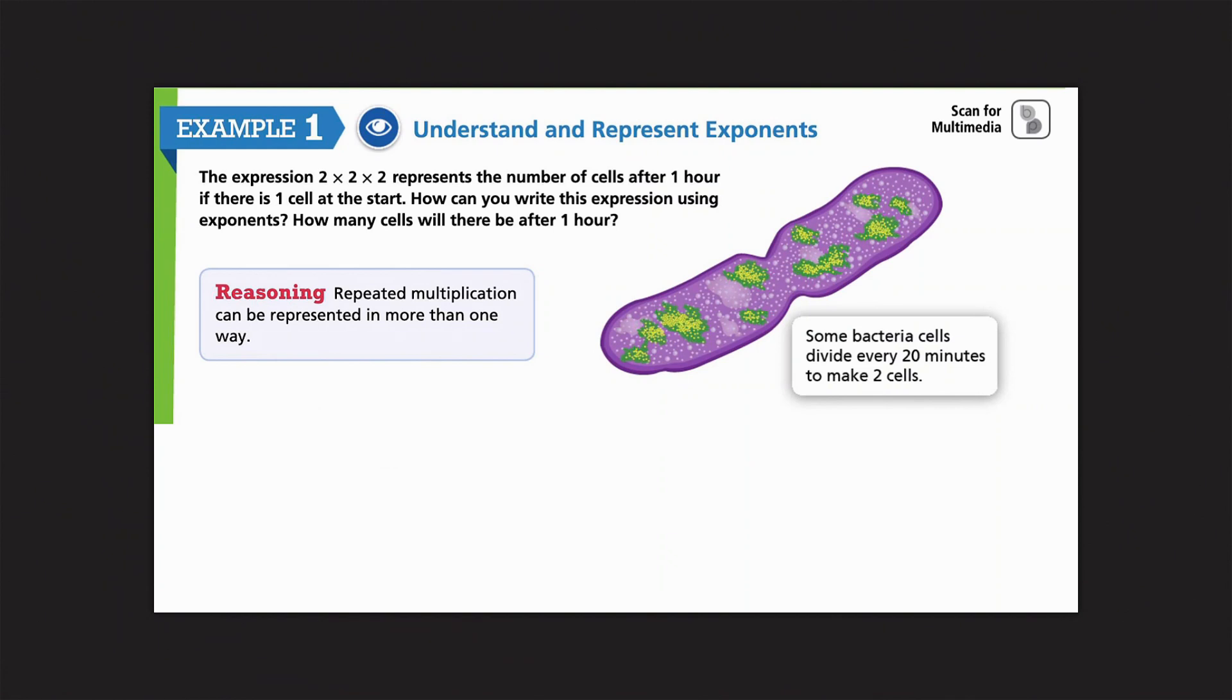The expression 2 times 2 times 2 represents the number of cells after one hour if there is one cell at the start. How can you write this expression using exponents? How many cells will there be after two hours? So, they're asking two questions here. First, is how can I write this expression using exponents? So, they've already given me an expression here. So, it says after one hour. I know hours go by 20 minutes, so that's going to be 20 minutes, 40 minutes, 60 minutes. So, how can I write that using an exponent?